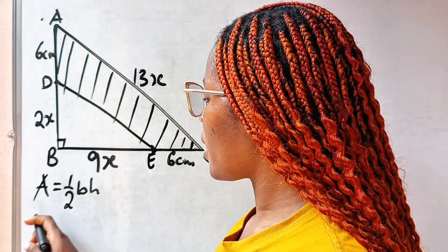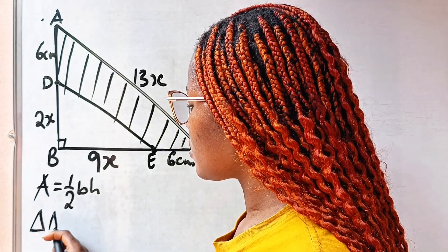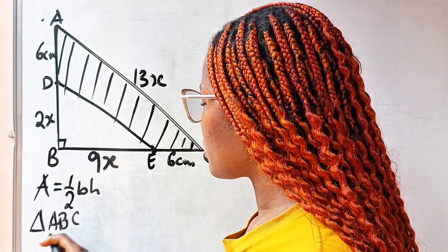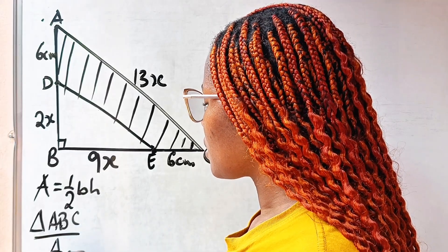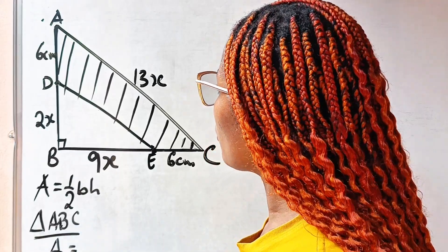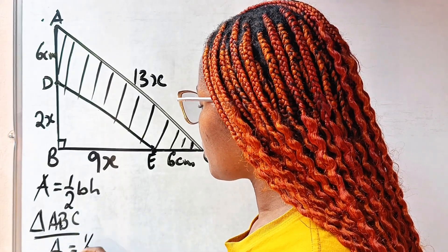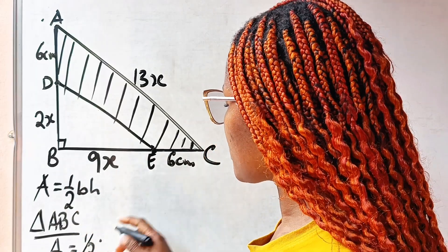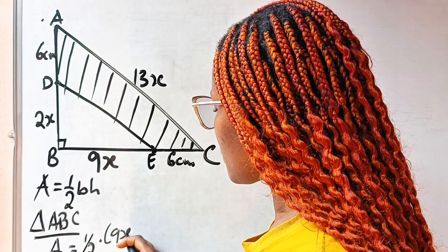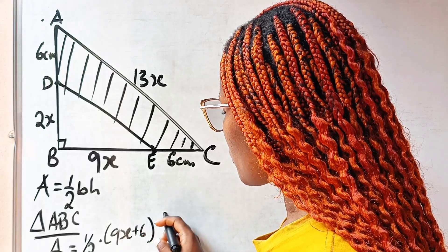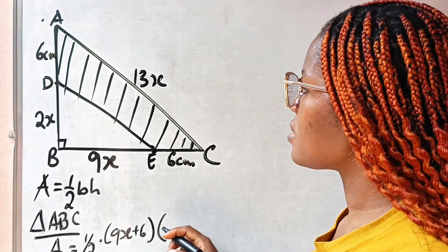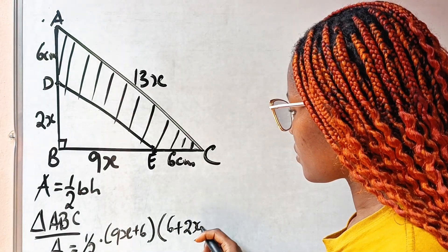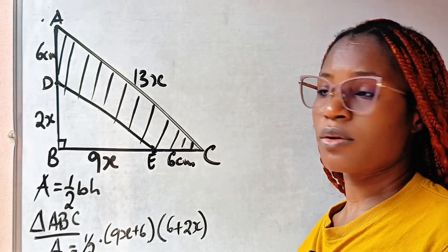In triangle ABC, the area should be equal to half multiplied by the base. The base is 9x plus 6, multiplied by the height. The height is 6 plus 2x. That should be our area.